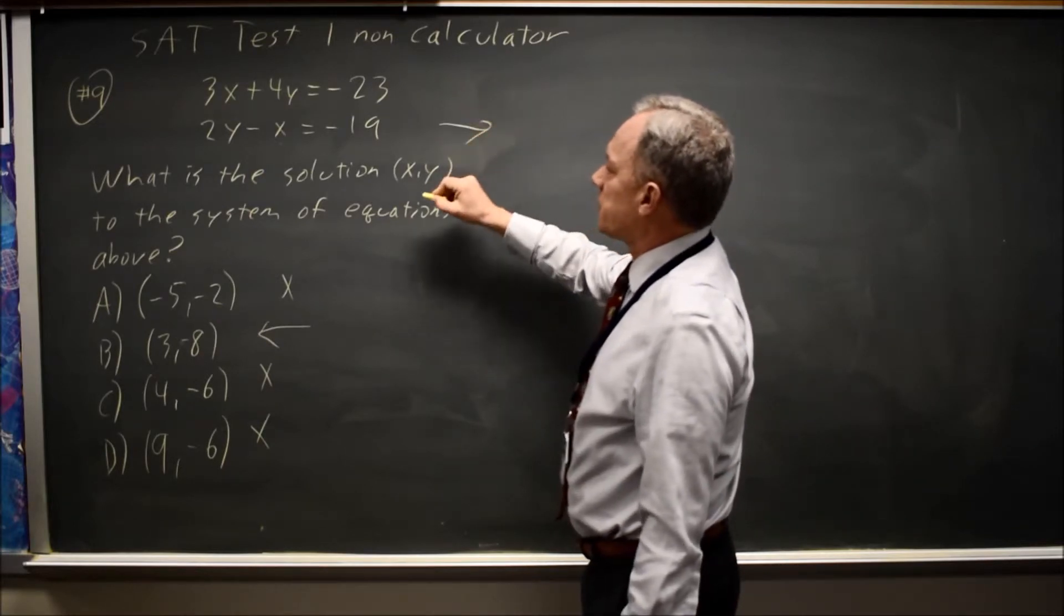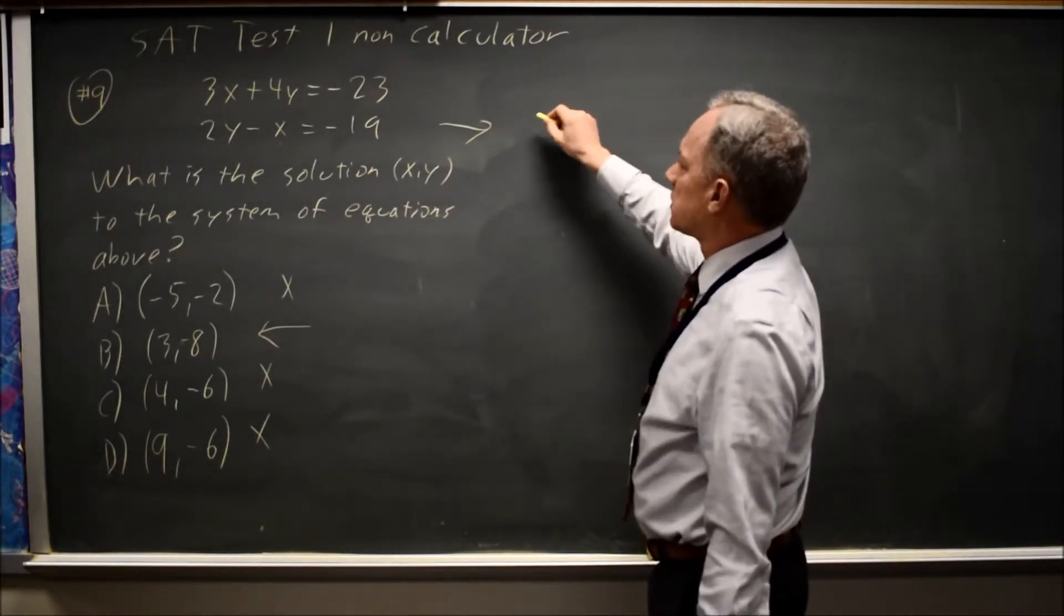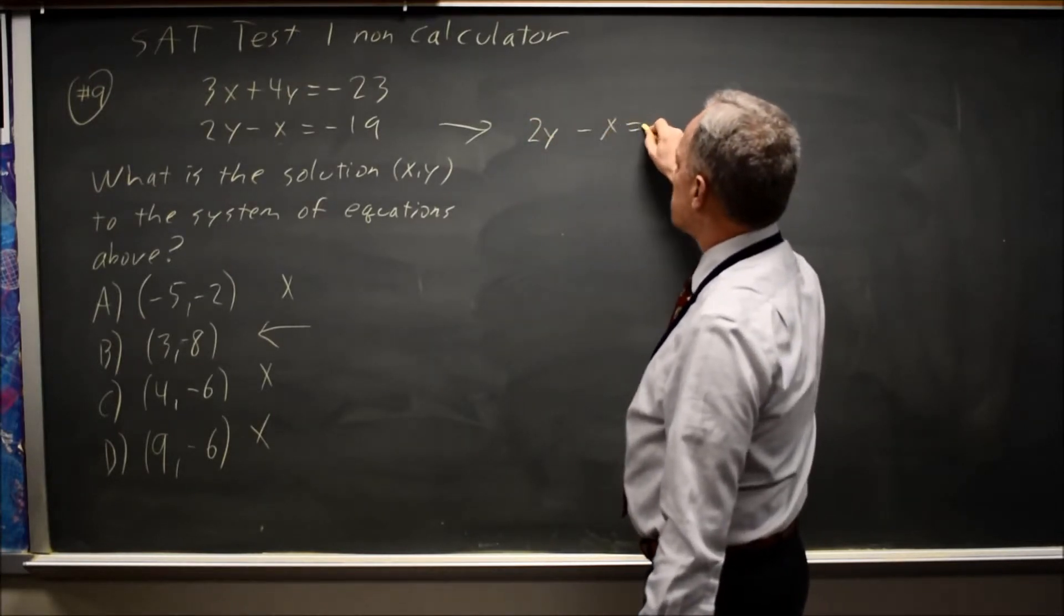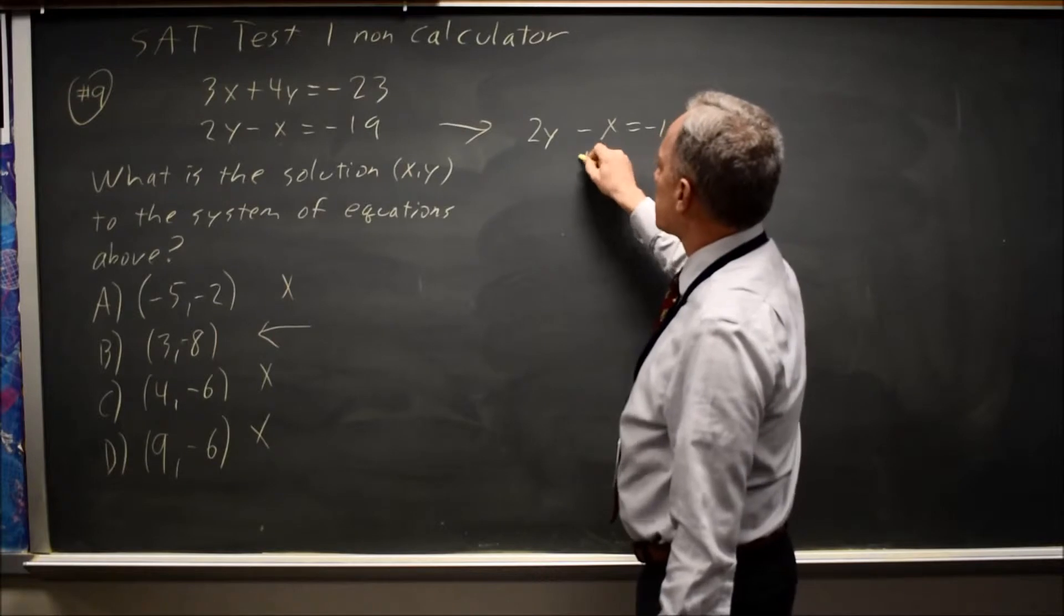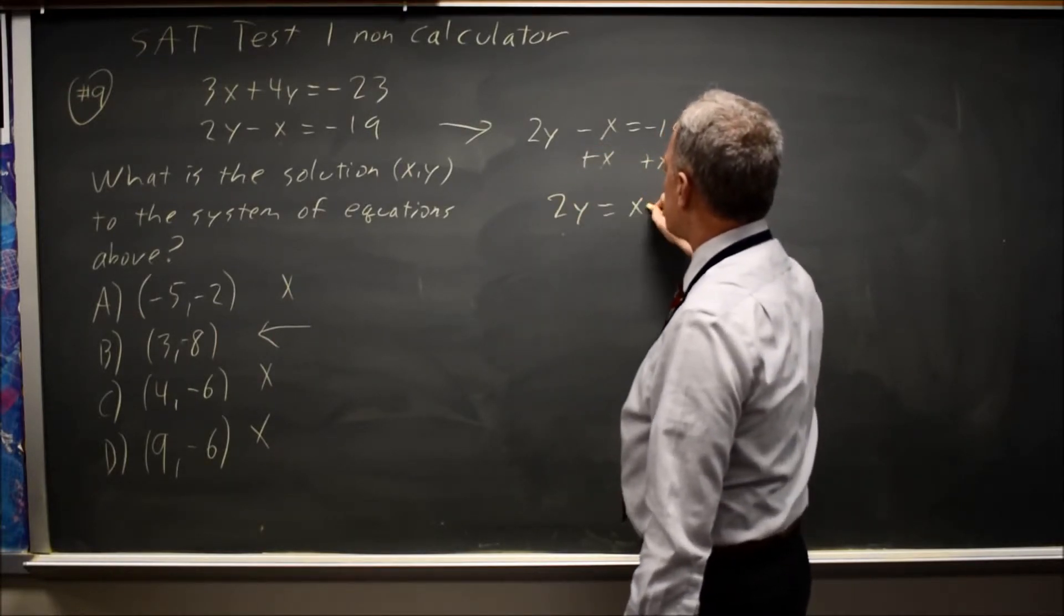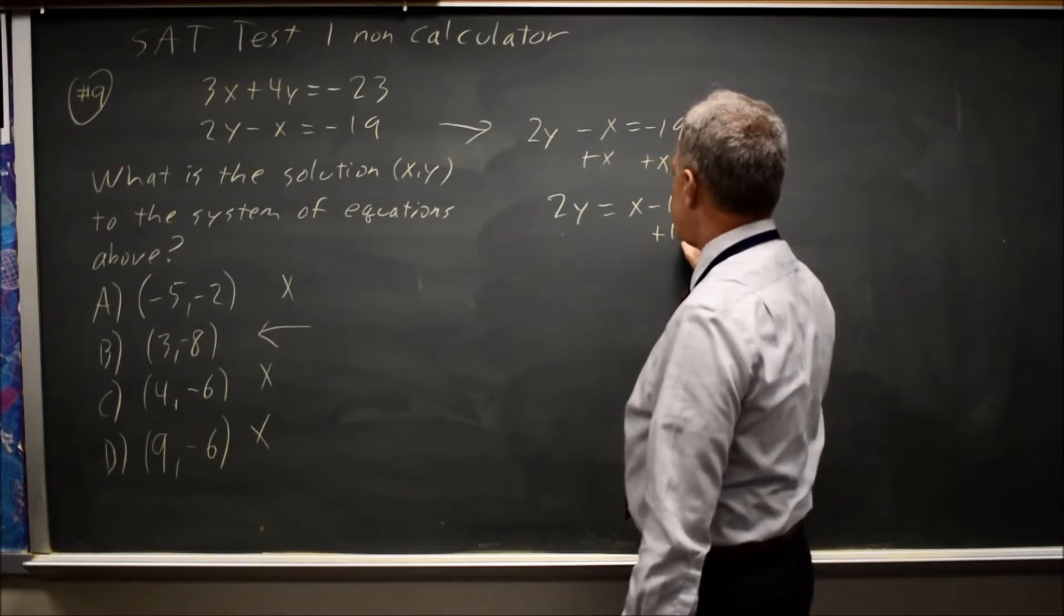For an algebraic answer, let's solve the second equation for x. 2y minus x equals negative 19. Add x to both sides. 2y equals x minus 19. Add 19 to both sides.